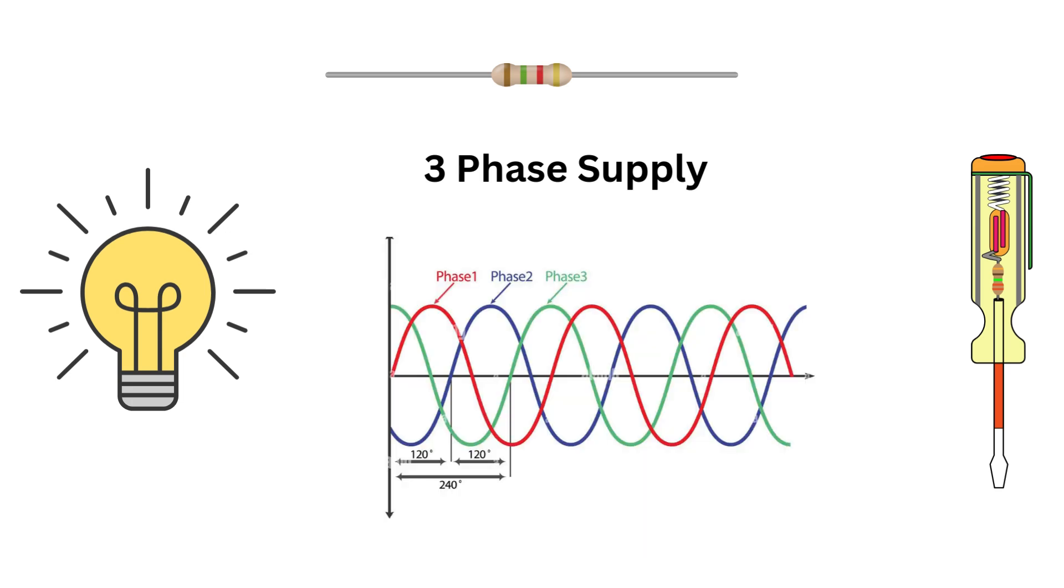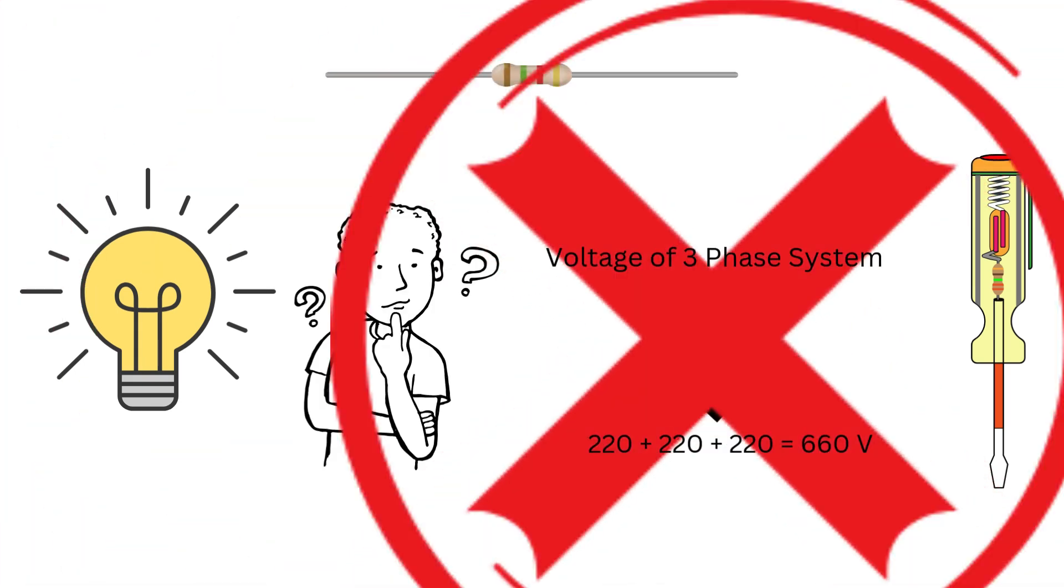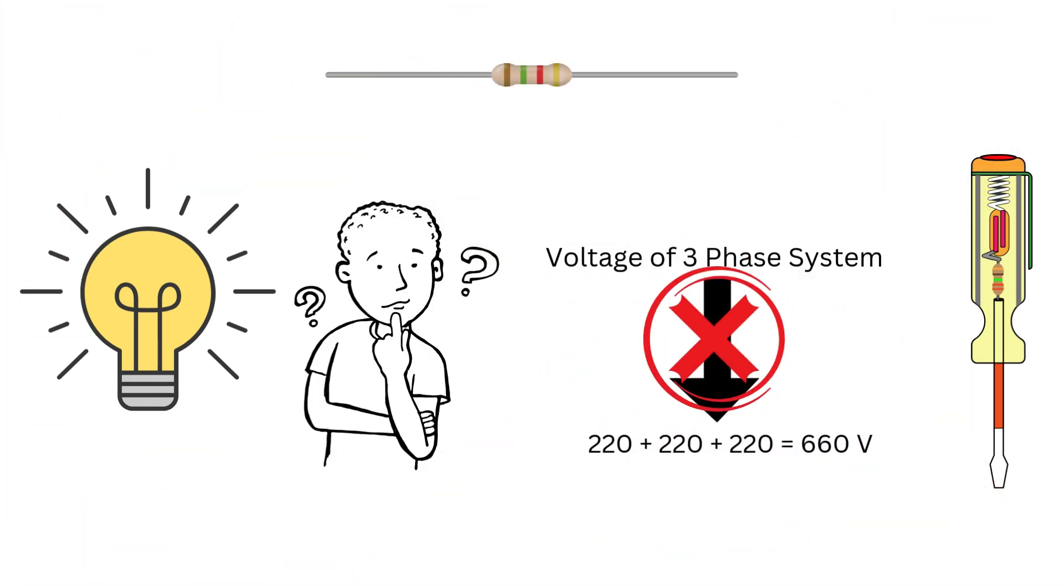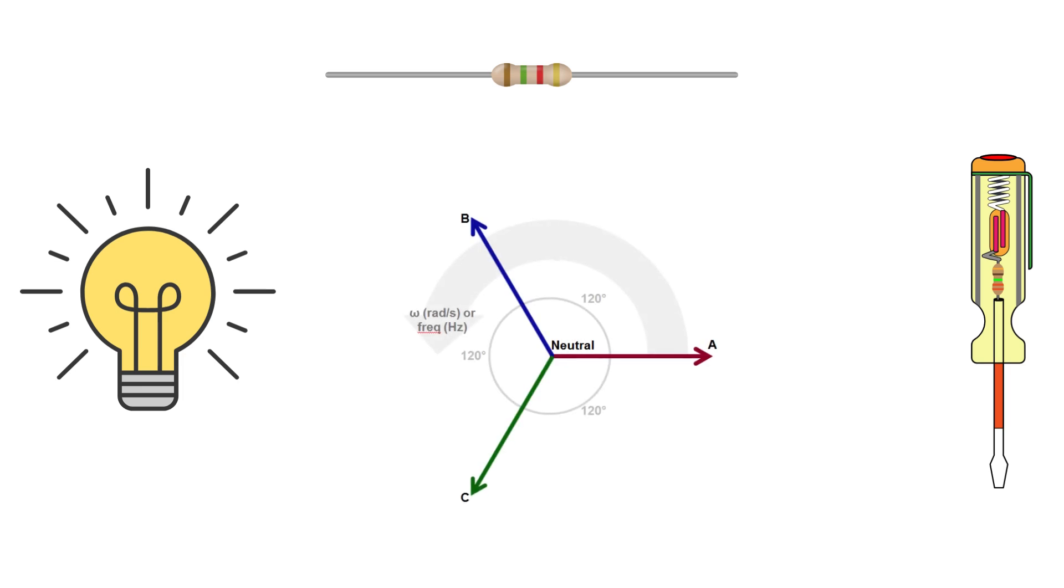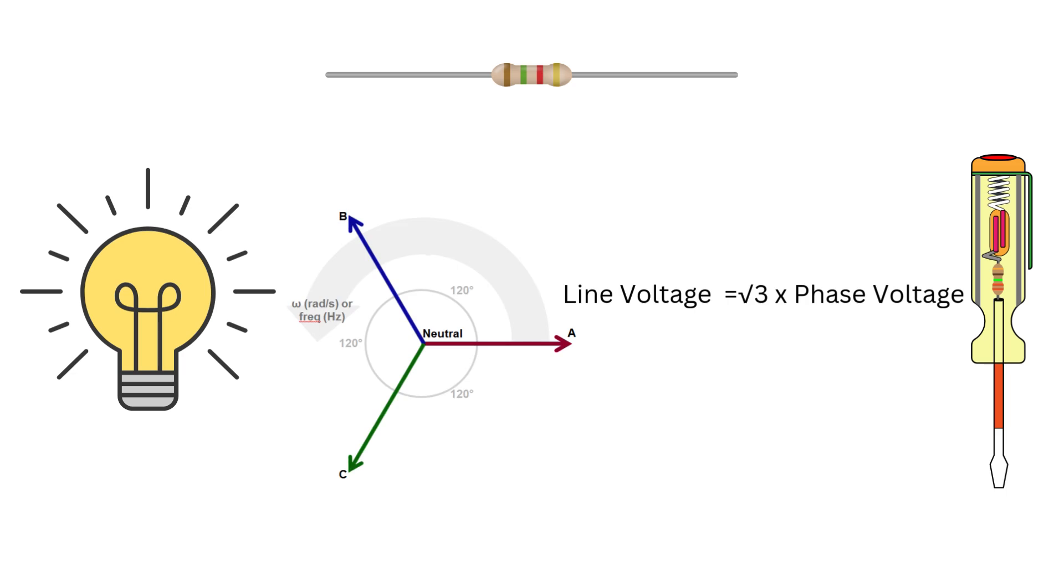Now here's the million dollar question. Why isn't the voltage of a three phase system simply 220 plus 220 plus 220 equals 660 volts? The answer lies in vector mathematics. In a three phase system, the voltages are 120 degrees apart. You can't just add them like regular numbers. Instead, we calculate the voltage between two phases using the formula root 3 into phase voltage.